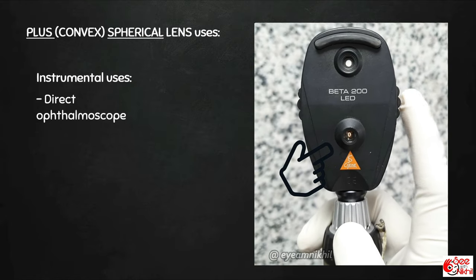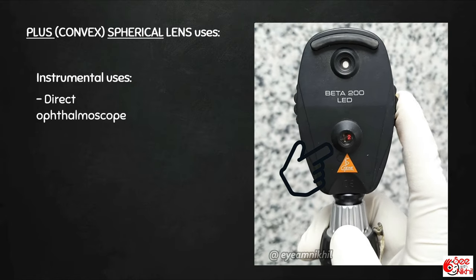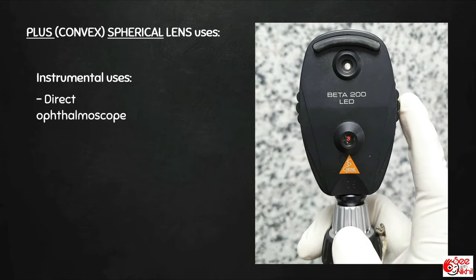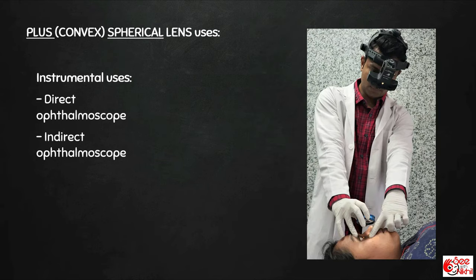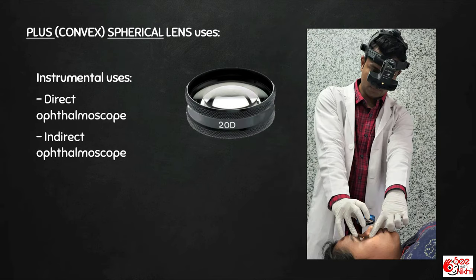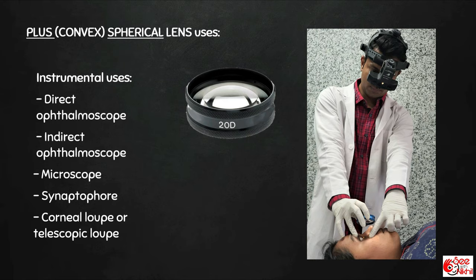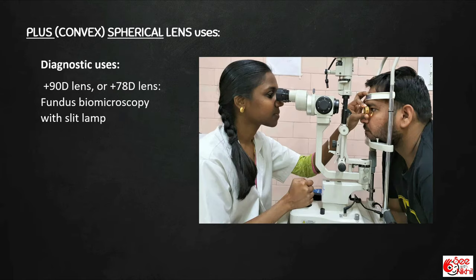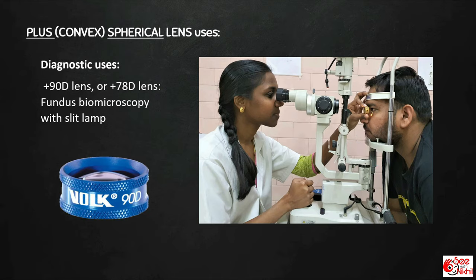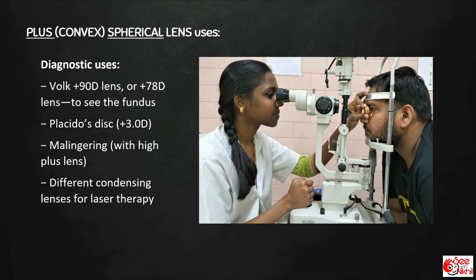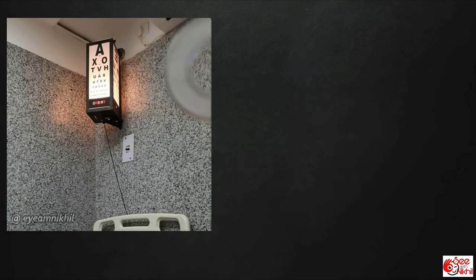Dialing the wheel clockwise increases the power while anticlockwise rotation decreases it. For performing indirect ophthalmoscopy, a 20-diopter plus spherical lens is used. Microscope, synoptophore, and corneal loops also use plus spheres. A 90-diopter or 78-diopter plus spherical lens is used for fundus biomicroscopy with a slit lamp. Other uses include the inner Placido disc, identification of malingering, and different condensing lenses for laser therapy.